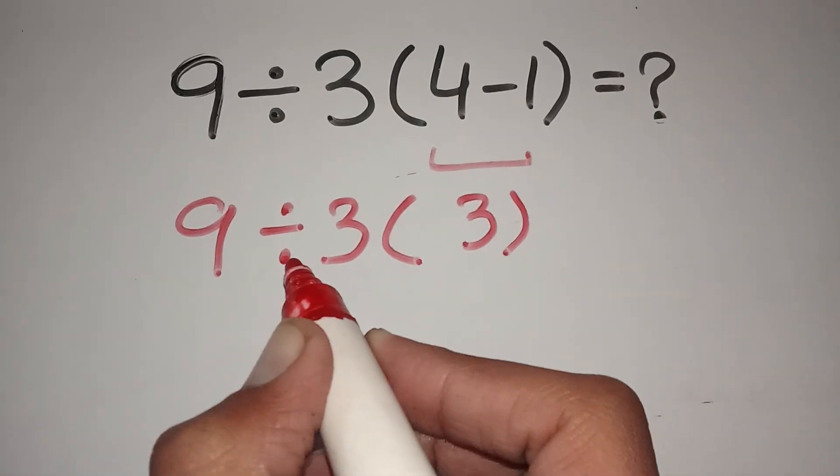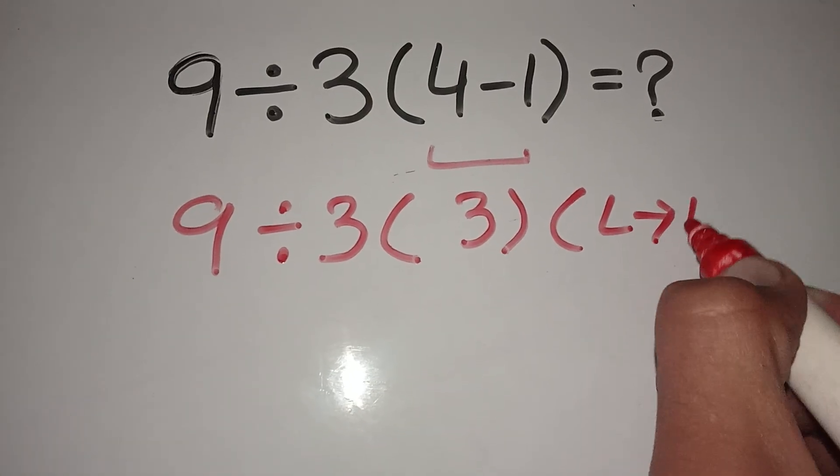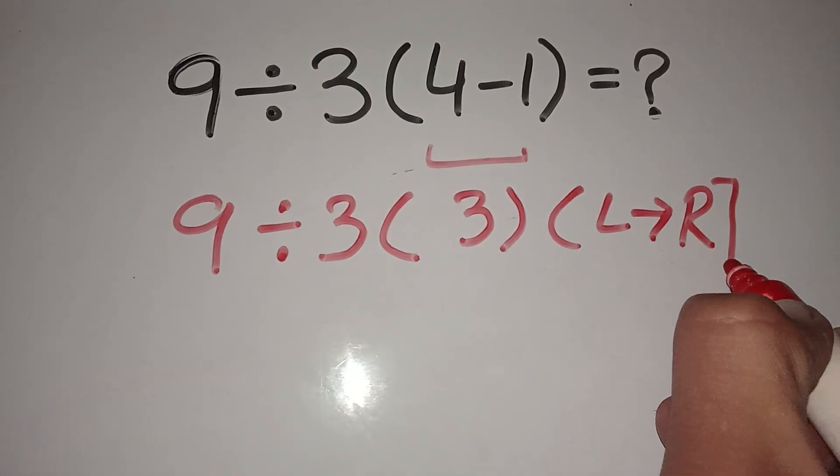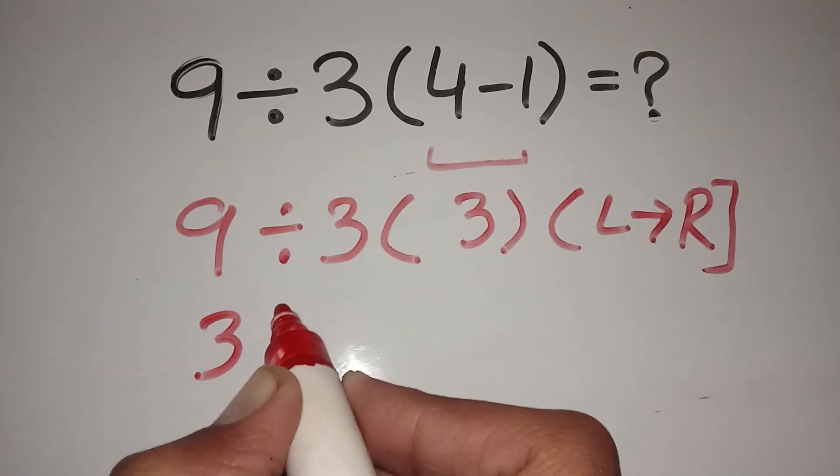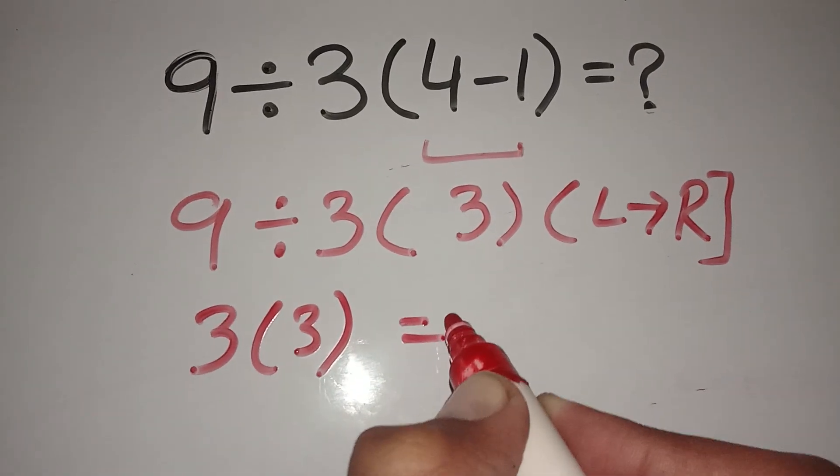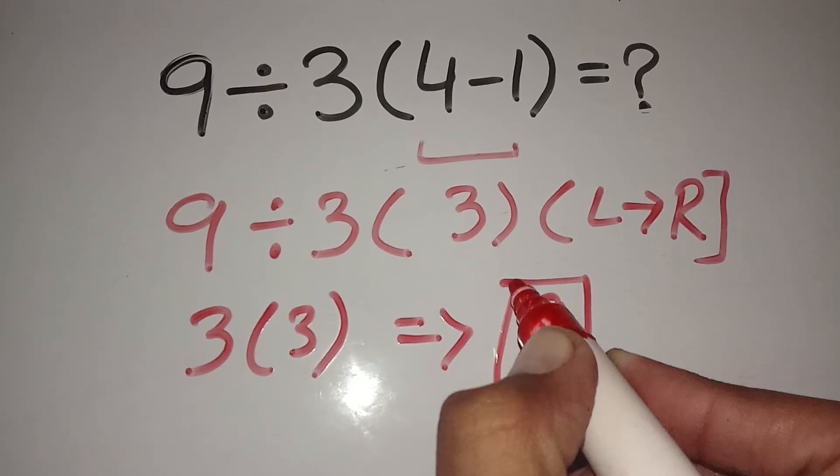Now here multiplication and division have equal priority and we solve it from left to right. So 9 divided by 3 equals 3, multiply by this 3. So 3 times 3 equals 9. This is the final answer of this math question.